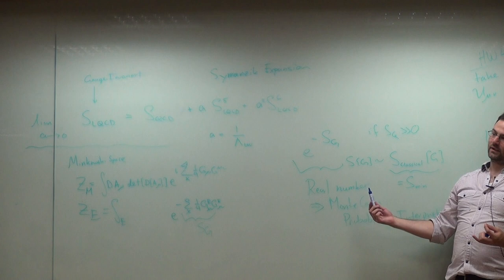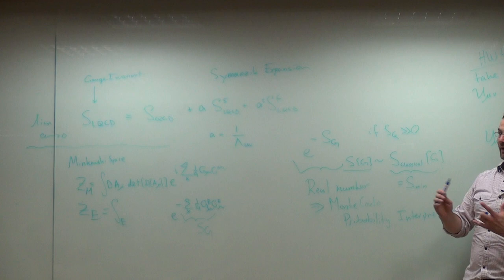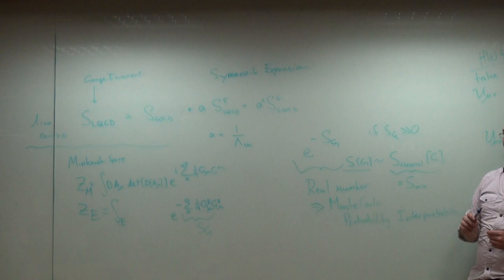And so this, for example, is why you can't do finite chemical potential. If you add a finite fermion chemical potential, this action becomes complex, and suddenly you don't know how to evaluate the most important contributions to the action in the world.